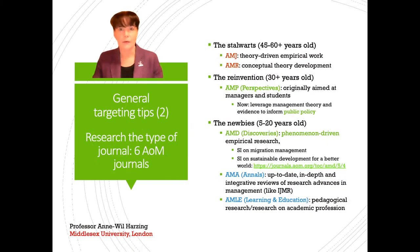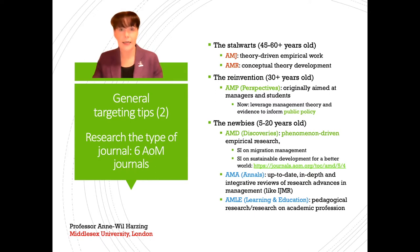A second general targeting tip is particularly applicable if you work in a discipline with a professional association that publishes a range of journals. In management, the main professional association is the Academy of Management, which currently publishes six journals. It started with two journals — the Academy of Management Journal, which focuses on empirical work, and the Academy of Management Review, which focuses on purely conceptual or theoretical work.